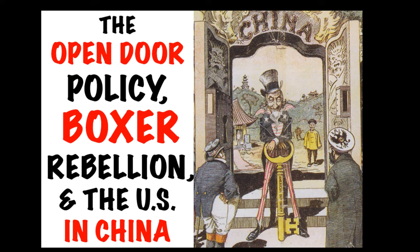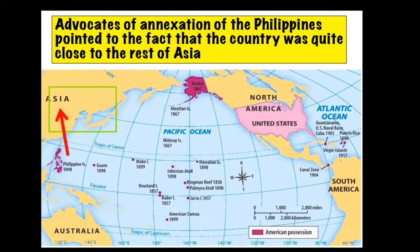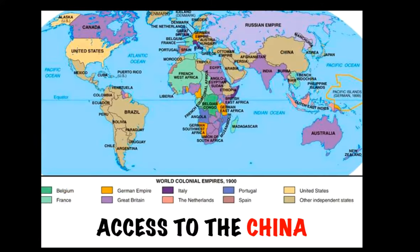What's up beautiful people? Today we're taking a close look at the Open Door Policy, the Boxer Rebellion, and why the US was all up in China's business. Remember, many of those who argued for US annexation of the Philippines pointed to the fact that the country was quite close to the rest of Asia, especially the lucrative trade market of China. The US hoped to increase their involvement in Asia, and China represented an untapped market for American goods and access to raw materials.